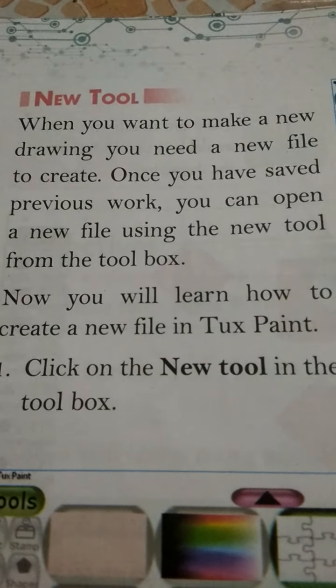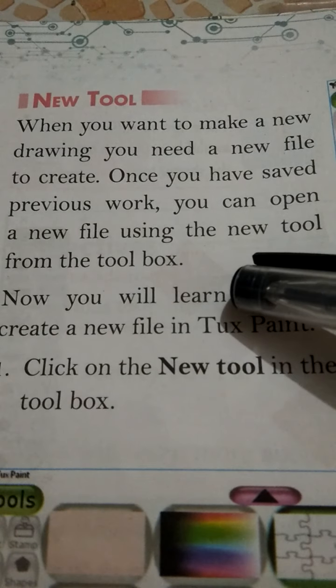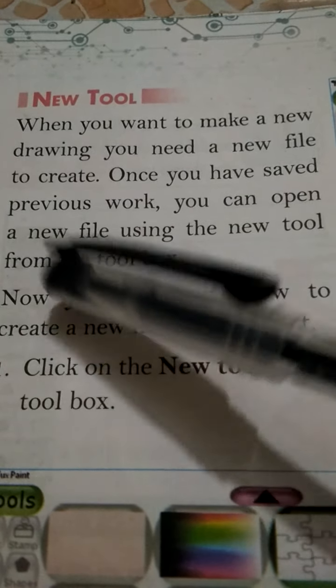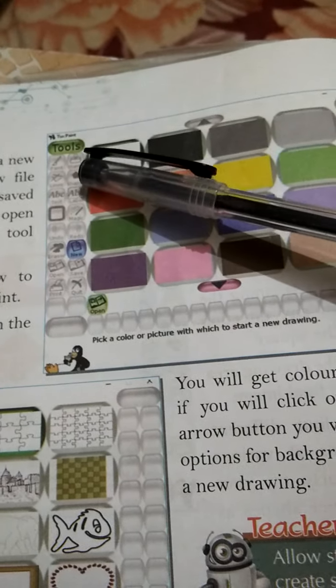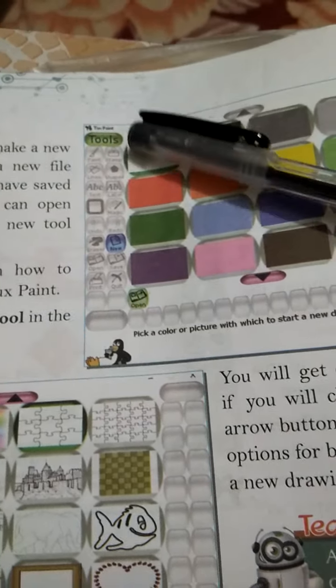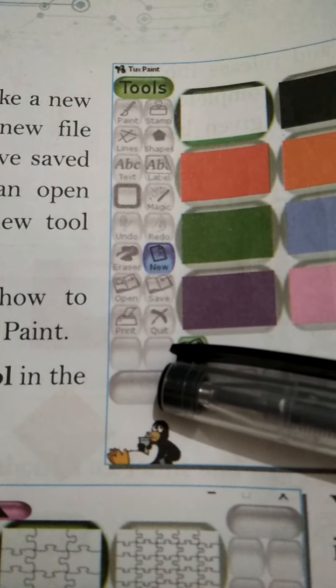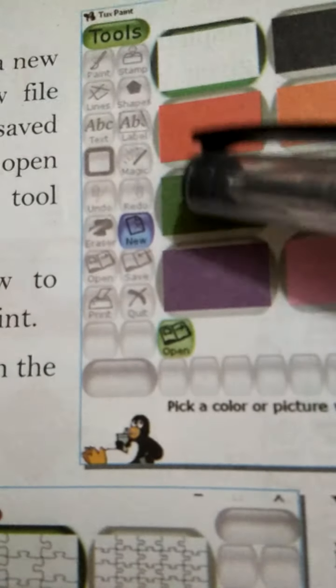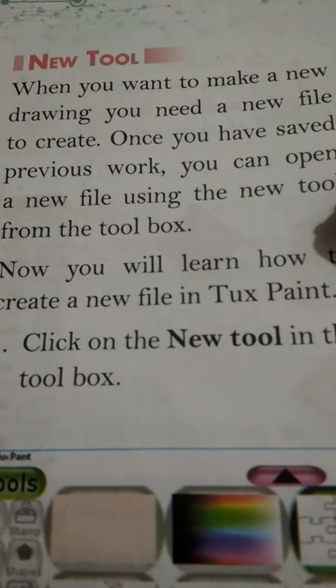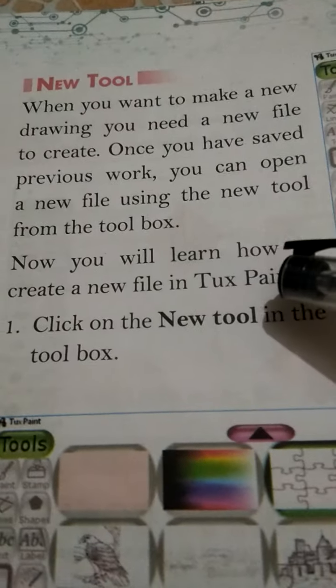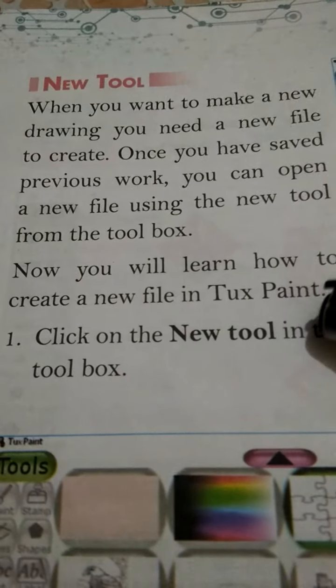From the toolbox, we can open a new file. We have a clearly seen screen — this is a test paint screen. Yesterday I told you to draw a new toolbox. Now you will learn how to create a new file in test paint.